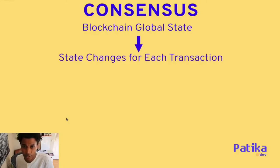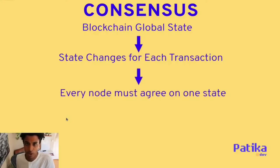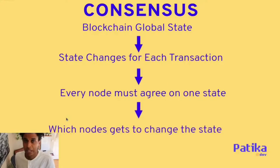For each transaction, the state changes — amounts change, transactions are moved around, and things are committed to the blockchain. In Ethereum, for example, smart contracts are deployed. Every time there's something new, the state changes and it needs to be managed. Every node must agree on the current state, because if a node has different data, the blocks become invalid. That's what consensus mechanisms solve — which node gets to validate the transactions in the blocks and commit them.